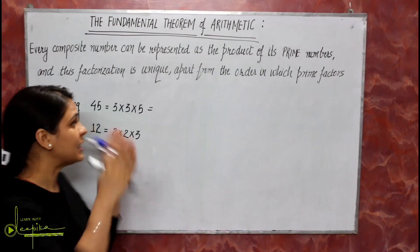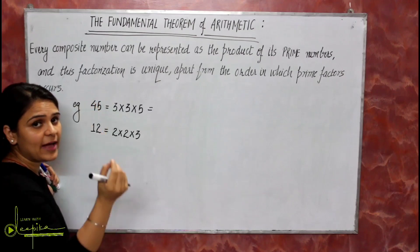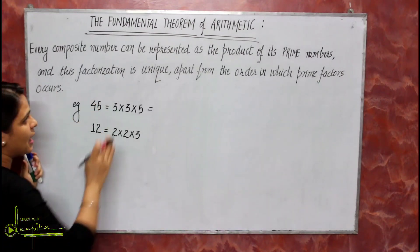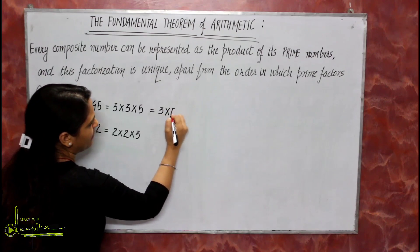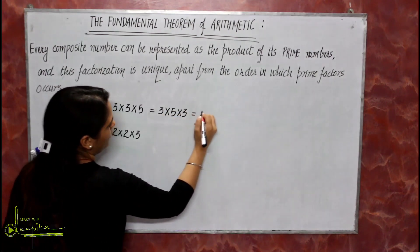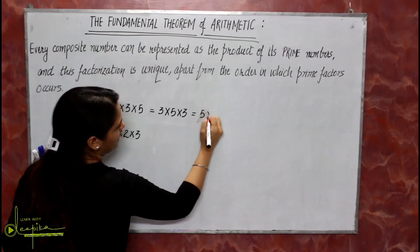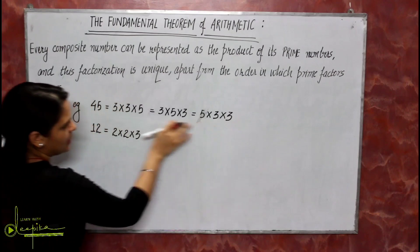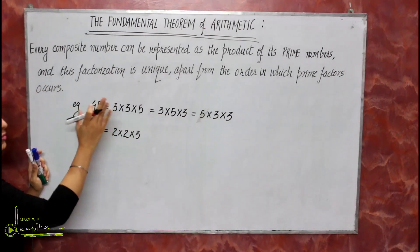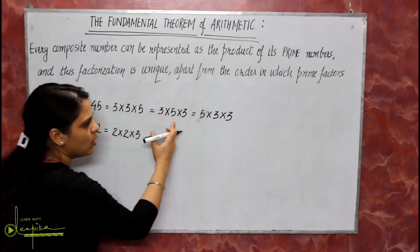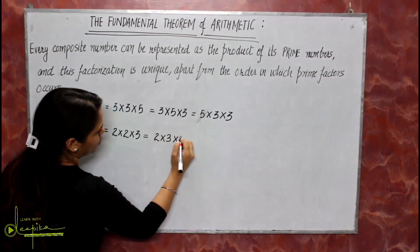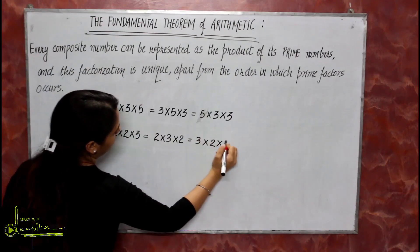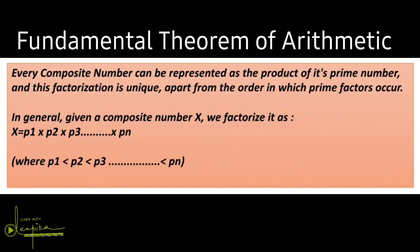In the Fundamental Theorem of Arithmetic, factorization is unique — meaning 45 will only have prime factors 3 and 5. However, the order can be different: you can write 3 × 5 × 3 or 5 × 3 × 3; they all give 45. Similarly for 12, you can write 2 × 3 × 2 or 3 × 2 × 2. In general, we write prime factors in ascending order.